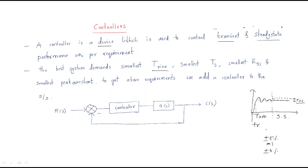The steady state error is the error between the desired output and the actual output at steady state. And smallest peak overshoot — peak overshoot means the difference between the steady state point and the maximum oscillating point. Every system must maintain the smallest rise time, smallest settling time, smallest steady state error, and smallest peak overshoot.